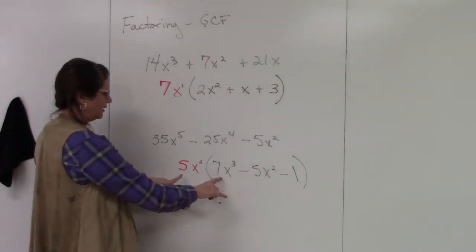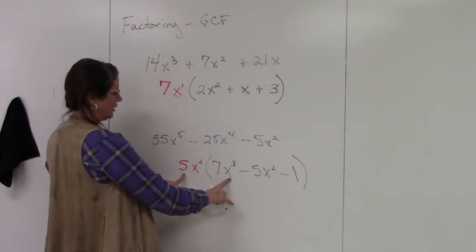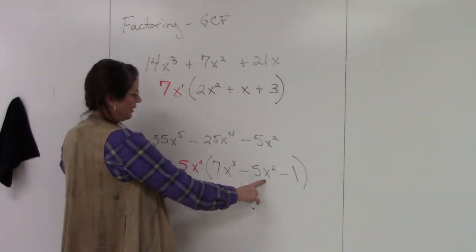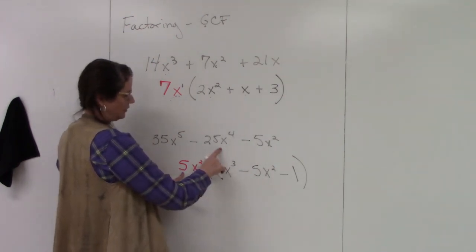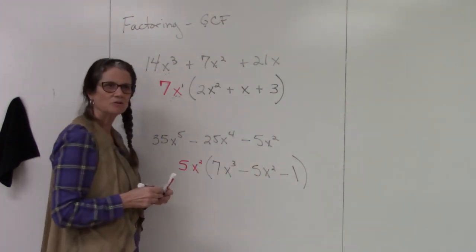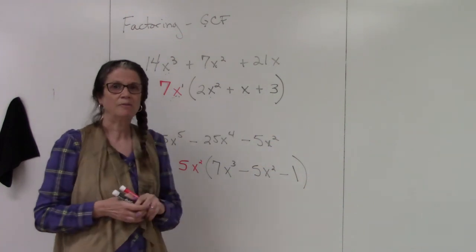And then again, I check. 5x² times 7x³, 35x⁵. 5x² times negative 5x², negative 25x⁴. 5x² times negative 1 gives me negative 5x². And that's factoring greatest common factor.